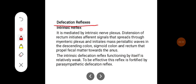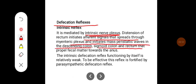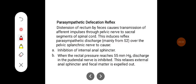Defecation reflex — that is, the intrinsic reflex — is mediated by intrinsic nerve plexuses. Distension of the rectum initiates afferent signals that spread through the myenteric plexus and initiate mass peristaltic waves in the descending colon, sigmoid colon, and rectum that propel fecal matter towards the anus. The intrinsic defecation reflex functioning by itself is relatively weak. To be effective, this reflex is fortified by the parasympathetic defecation reflex.